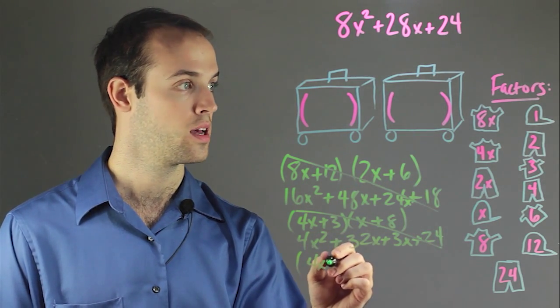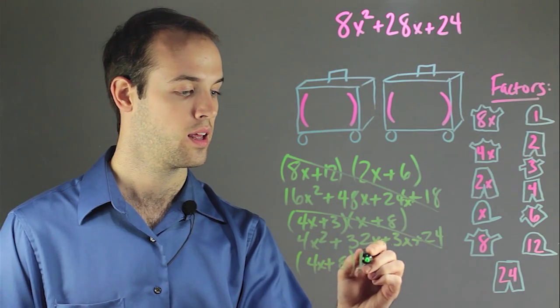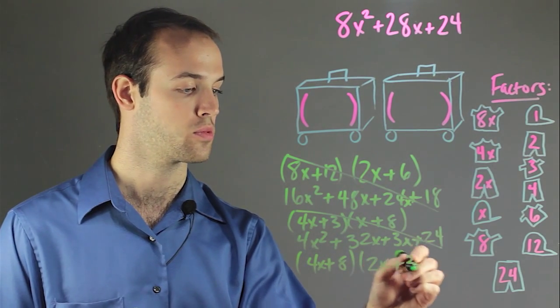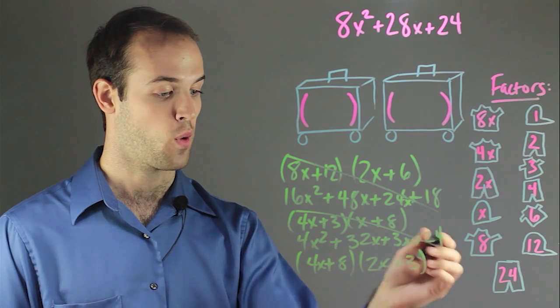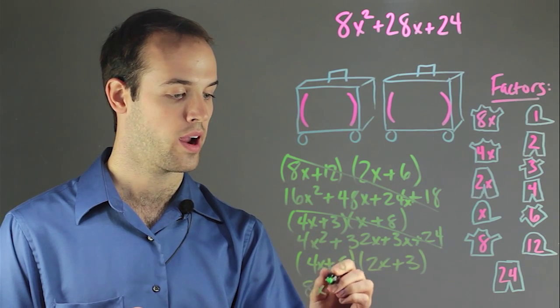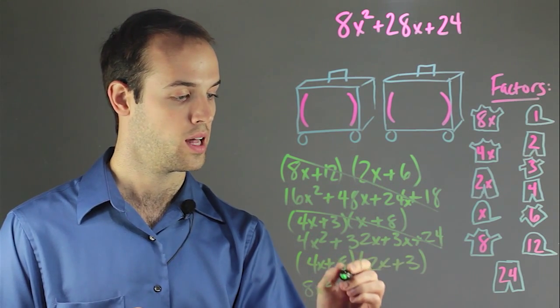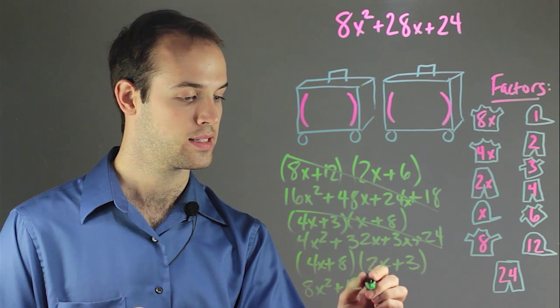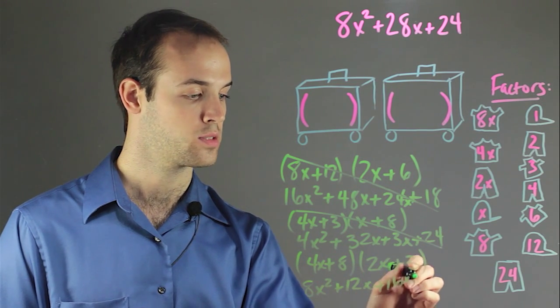I'm going to use 4x plus 8, and 2x plus 3. And if I foil that out, I'm going to have 8x squared, plus 12x, plus 16x, plus 24.